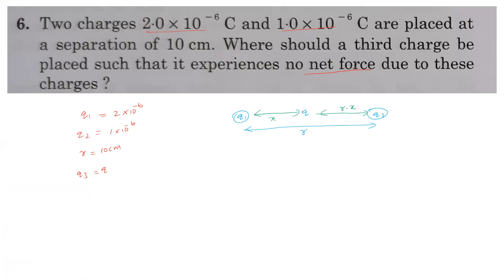The force on the third charge from q1 is f1 in one direction, and the force from q2 is f2 in the opposite direction. For net force to be zero, f1 and f2 must be equal and opposite. So: k·q1·q / x² = k·q2·q / (r−x)². We cancel k and q from both sides.